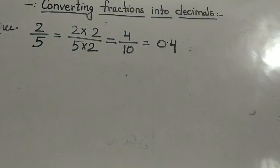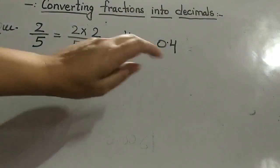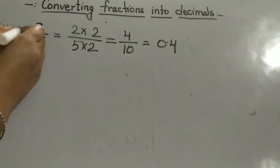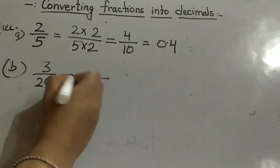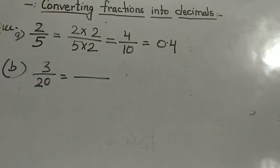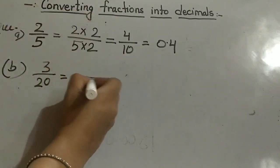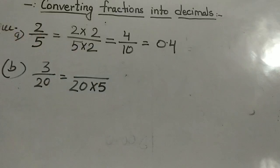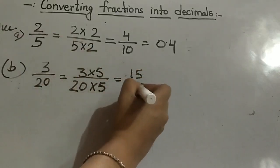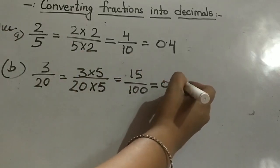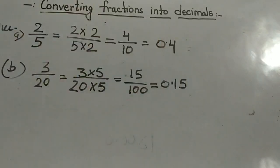For this method we have to learn some combinations, like 5 times 2 are 10. Suppose the question is 3 upon 20. So 20 cannot be converted - we cannot convert 20 into 10, so we will go to 100. 20 times 5 are 100.